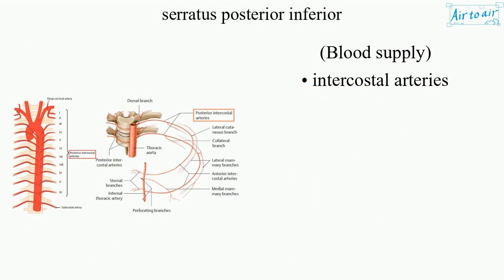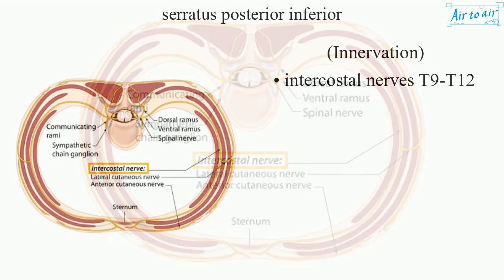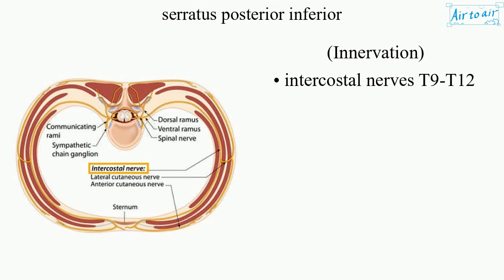Blood Supply: Intercostal Arteries. Innervation: Intercostal Nerves T9-T12.